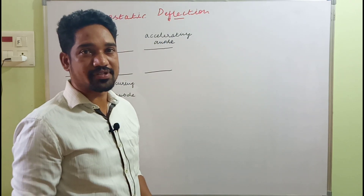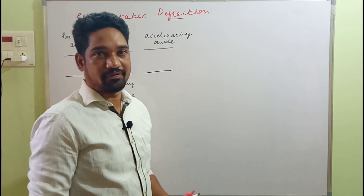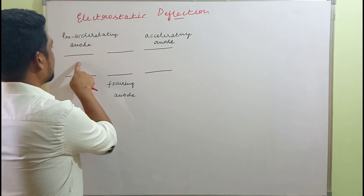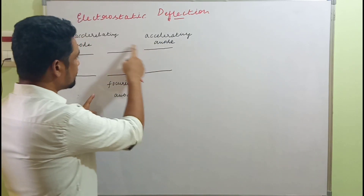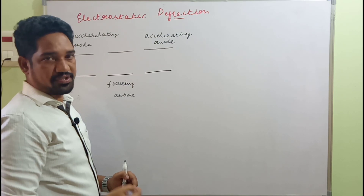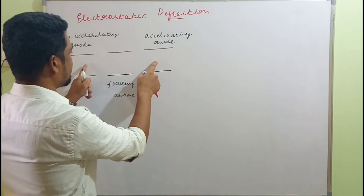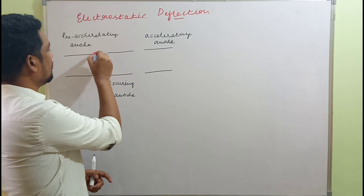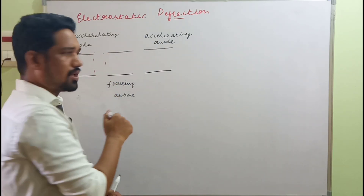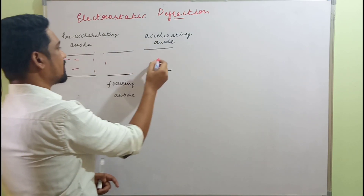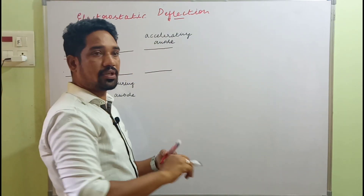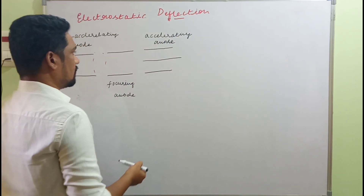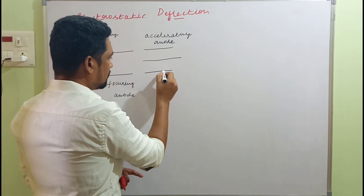Considering the side view of a CRT cathode ray tube, we have an arrangement with back-to-back connected anodes: a pre-accelerating anode, focusing anode, and accelerating anode, maintained at different potentials. The main objective of arranging them like this is to create an electronic lens, so that any electron emerging from any direction will, by the time it emerges from the accelerating anode, be traveling in a straight beam.